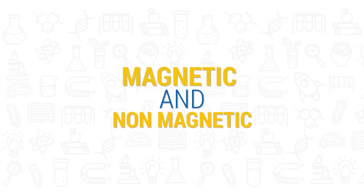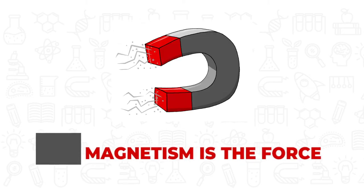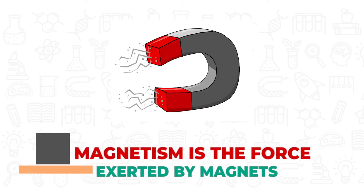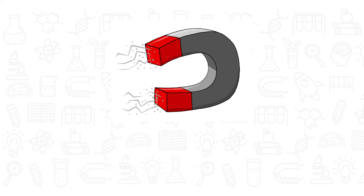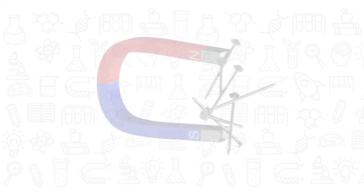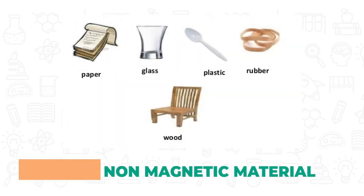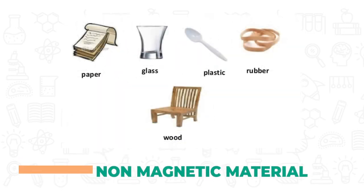Magnetic and non-magnetic. Magnetism is the force exerted by magnets when they attract or repel each other. Materials which are attracted towards a magnet are magnetic, for example iron. Materials which are not attracted towards a magnet are non-magnetic.